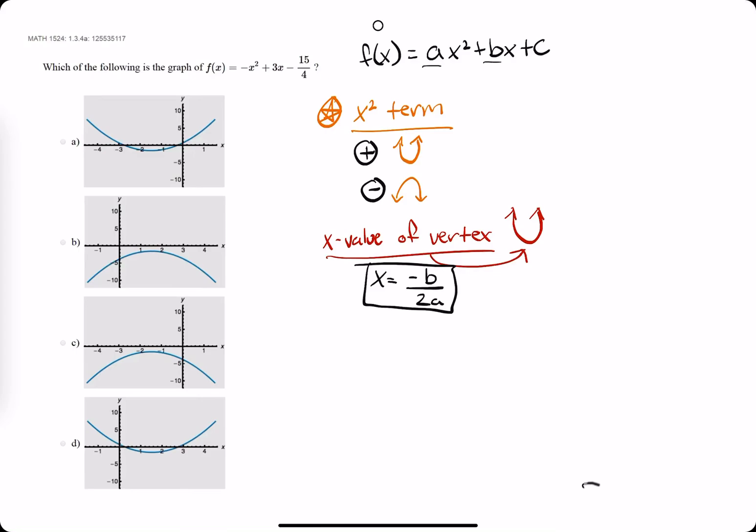So the two main things we're looking for to identify the answer is starting with the x squared term. We want to identify whether it's positive or negative because this will indicate whether the parabola or u-shaped curve is opening up or opening down. We look right here at our negative x squared. Just like that we can tell it's going to be an upside down u or parabola. So we can eliminate options a and d just like that.